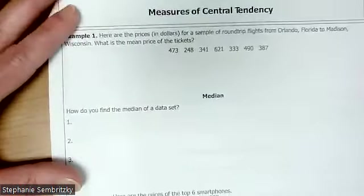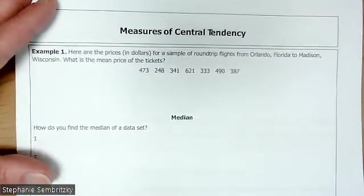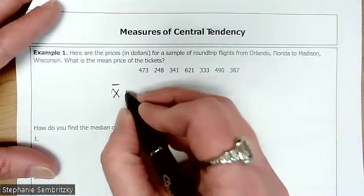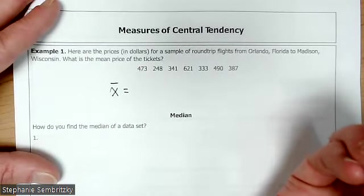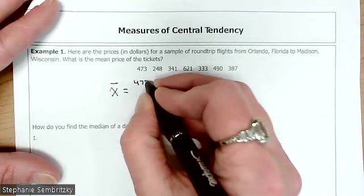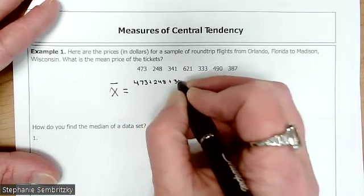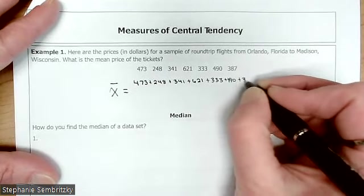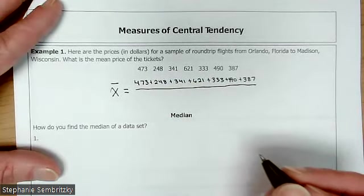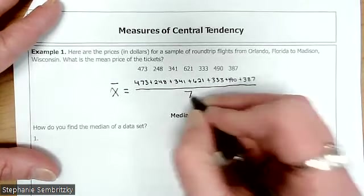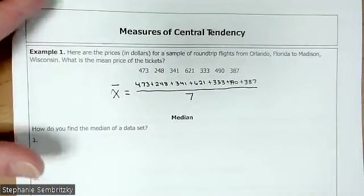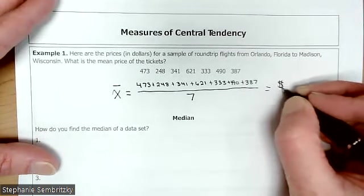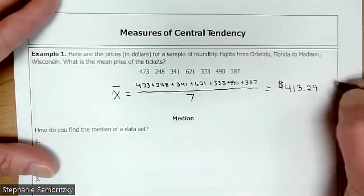Well, let's find a mean then. Here are the prices in dollars for a sample of round trip tickets from Orlando, Florida to Madison, Wisconsin. What is the mean price of the tickets? So since this is a sample, we are definitely finding the sample mean. So what would we do first? We need to add them up. So for my video since I'm recording, I'm going to show that we're going to add them all up. You do not have to write that. Divided by how many values are there? Seven. What'd you get? 429 dollars and 29 cents is the average price.